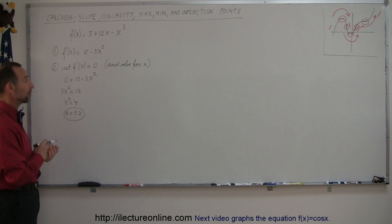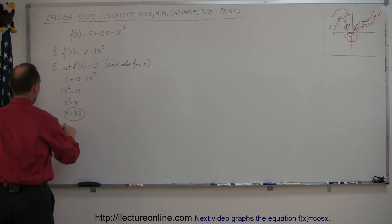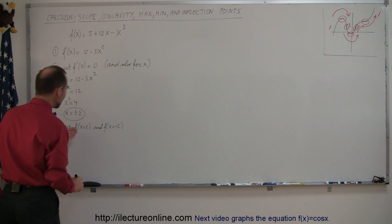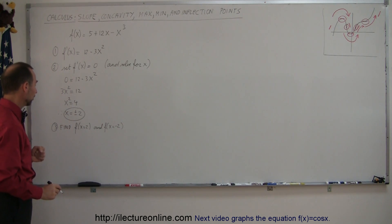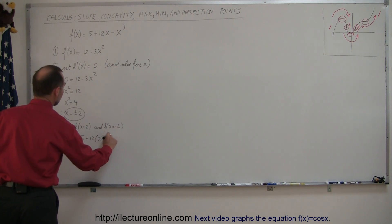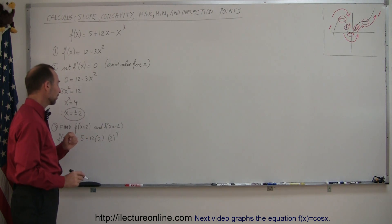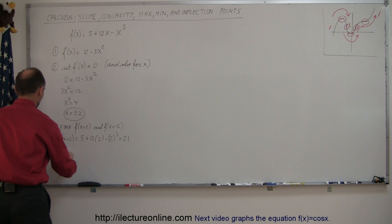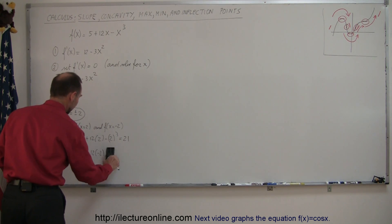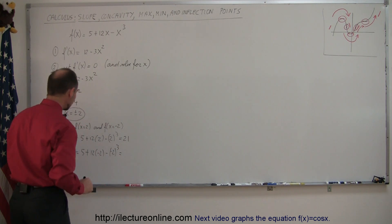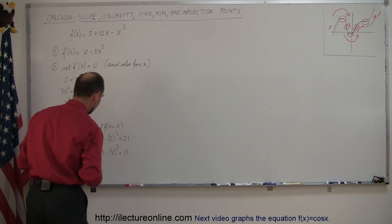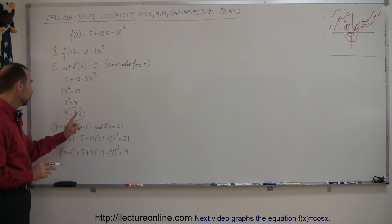We don't know yet where the corresponding y values are, so for that we need to do step 3: find the corresponding y values. We find f(2) and f(-2) — the y values at the points where the slope is 0. f(2) = 5 + 12(2) - 2³ = 24 + 5 - 8 = 21. And f(-2) = 5 + 12(-2) - (-2)³ = -24 + 5, and (-2)³ = -8 so minus negative 8. So when x = 2, y = 21. When x = -2, y = 11 (to be corrected later).